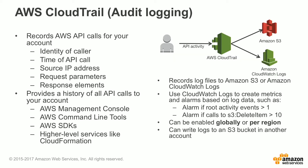Let's talk about CloudTrail. AWS CloudTrail enables you to have an audit log of your AWS API calls in your account. With AWS CloudTrail, you get a record of such things as the identity of the caller of the API, the time of the API call, the source IP address, the request parameters, as well as the response elements.